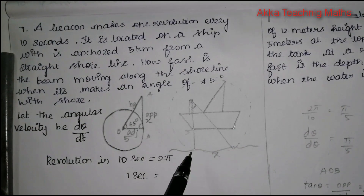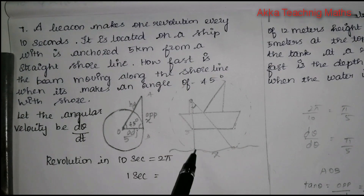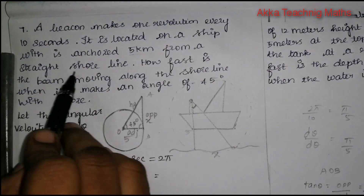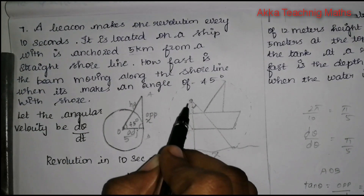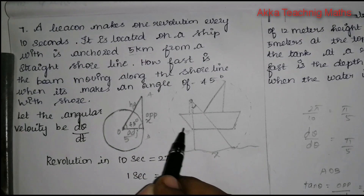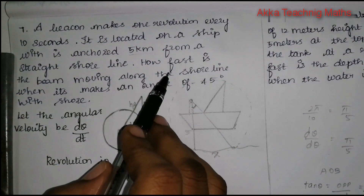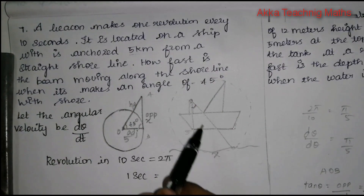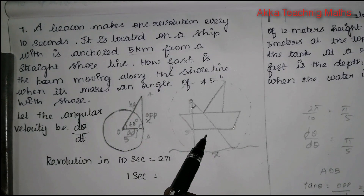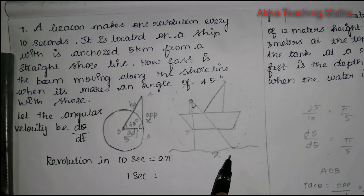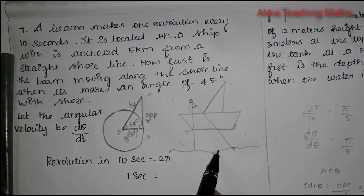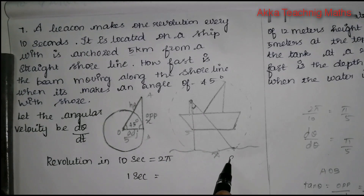So, in the light's path, it is located on a straight line. The distance is 5 km from a straight shoreline. So, this is how fast the light is moving — we need to find dx divided by dt.